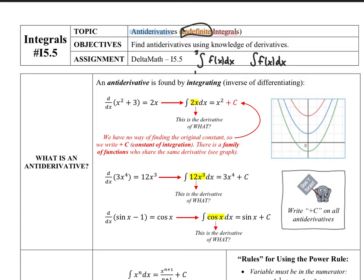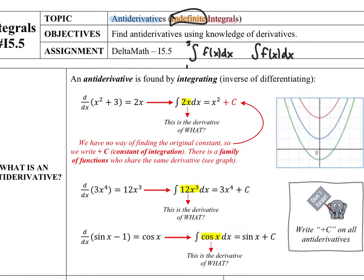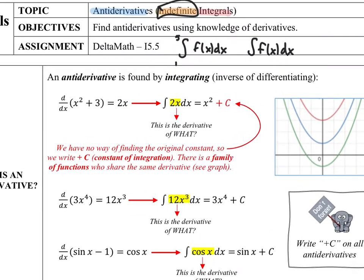We will connect those two worlds with what's called the Fundamental Theorem of Calculus, and that's coming in the next lesson. So first, what is an antiderivative? It is simply the inverse of differentiating. We know how to do a derivative of x squared plus 3 — that's a power rule, so the derivative is 2x. The constant drops off, and that's why there's nothing there.